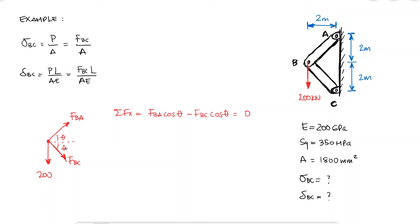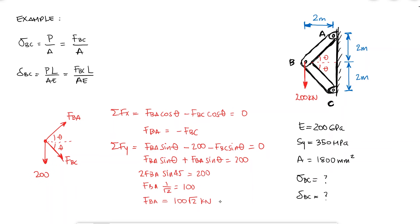From sum of forces in the x direction, I find out that FBA is equal to minus FBC. If finding the components of a vector in the x and the y direction is not completely clear to you, you can check out some of the other links in the description below. Using this information and doing a sum of forces in the y direction and knowing that the angle theta is equal to 45 degrees, I find that FBA is equal to 100 square root of 2 kilonewtons, and FBC is equal to minus 100 square root of 2 kilonewtons.